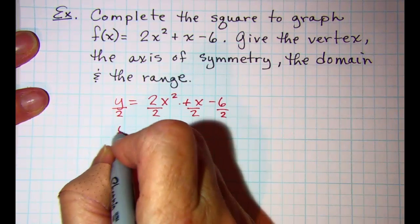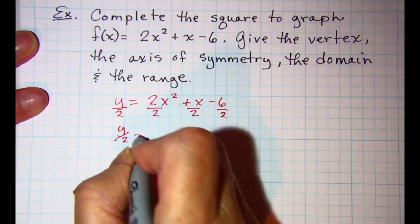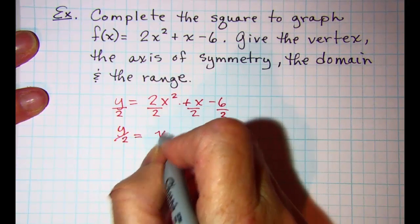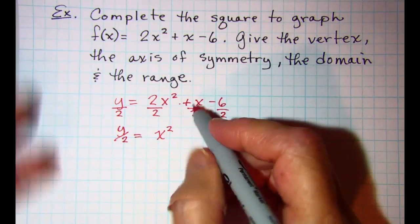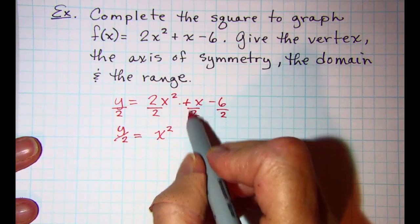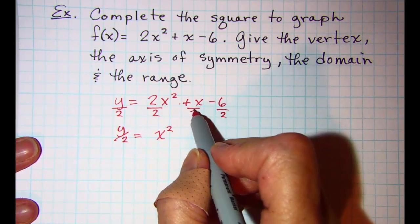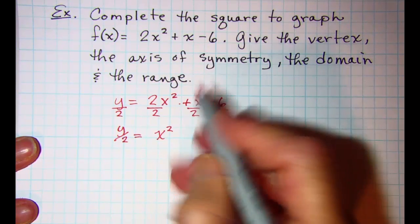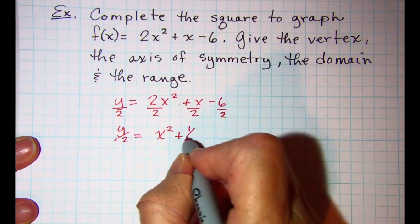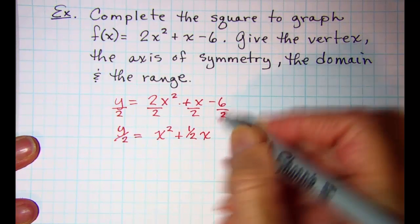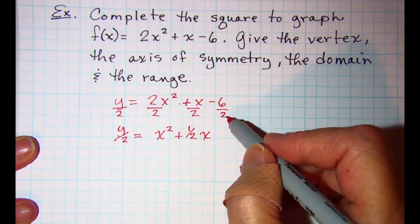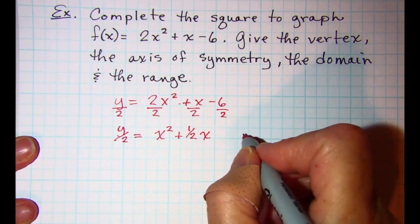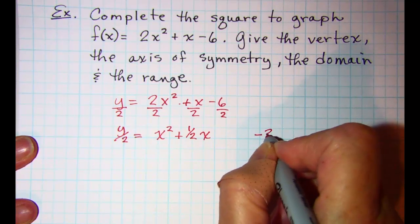So I need to divide by 2 to get that off of there. So I now have y over 2 equals, these cancel, and I have x squared. I'll also need to use the coefficient of x separate from x. So I'm going to write this as 1 half x and then the negative 6 over 2 I'm going to write as negative 3 and I'm going to move it over a little bit.